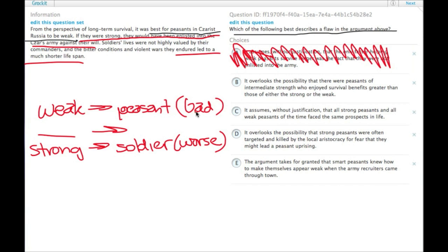It's not so much a flaw as something that's missing, but ultimately it is a flaw because it does say it was best for the peasants to be weak. If it turns out that there was something that you could be with intermediate strength that was better than just being weak, then that would be a flaw in the argument and it would no longer be best to be weak. So choice B.